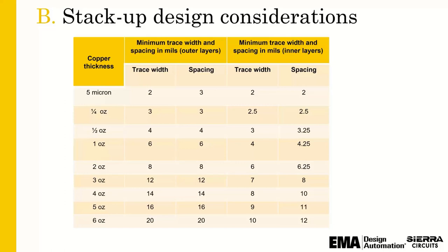The takeaway rule here: know this table, be aware of it, and understand how the fabricator is going to manufacture your board. Your design might dictate that you start with a quarter-ounce foil because of tight spacing and copper weights, and that would ultimately affect the impedance results and even your initial modeling. So it's okay to talk to your fabricator and get an initial stack-up, especially if you're trying to keep your impedance within a certain tolerance.